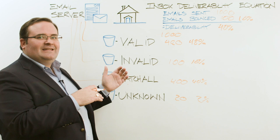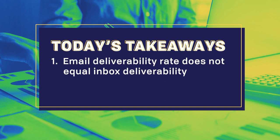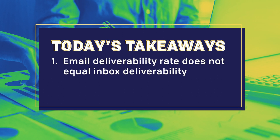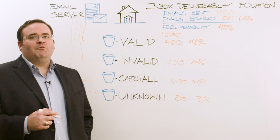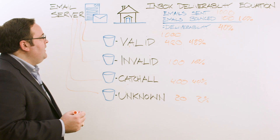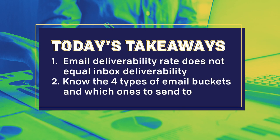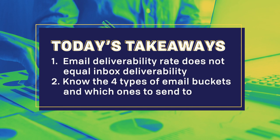As a recap: the inbox deliverability equation is highly deceptive — if you're bouncing 10% of your emails, you are not delivering 90%; it is much lower and is probably detrimental to your overall email campaign. Fix that problem and your open rates will go up, which is a metric you can actually see. On the email verification side, here's what to do: valids — keep them; invalids — delete them; catch-alls — do the math we talked about; and unknowns — keep them for a later time because they still might be good.